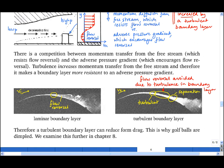Therefore, a turbulent boundary layer can actually reduce the drag on a body. And this is why golf balls are dimpled. We will examine this further in Chapter 8.